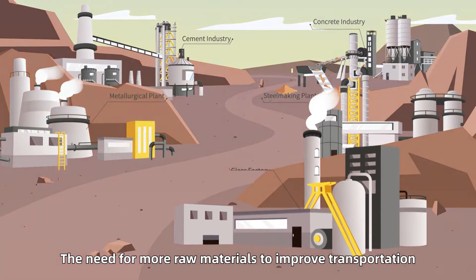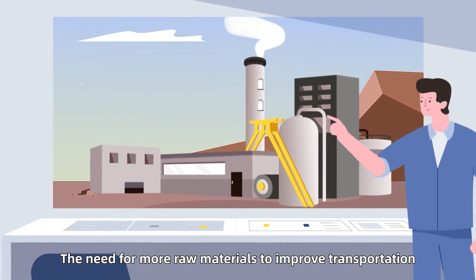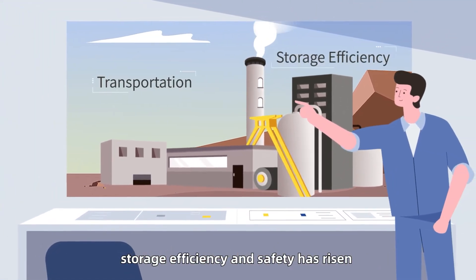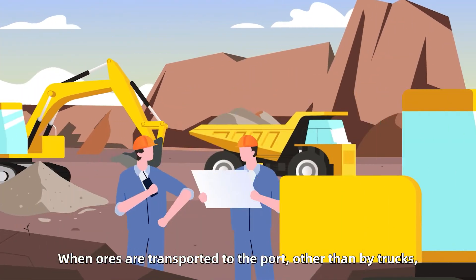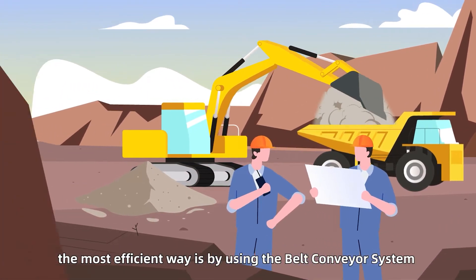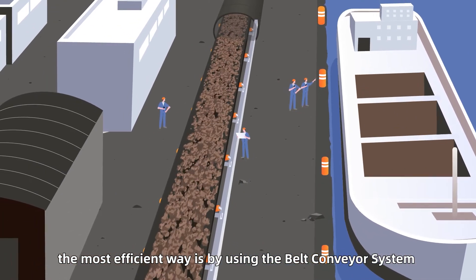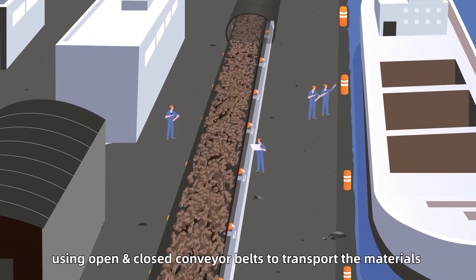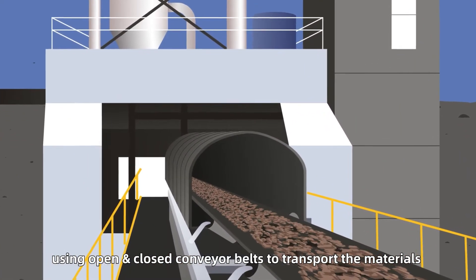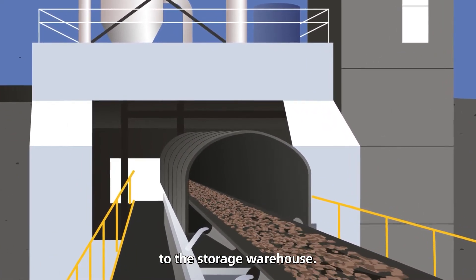The need for more raw materials to improve transportation, storage efficiency and safety has risen and become increasingly important. When ores are transported to the port other than by trucks, the most efficient way is by using the belt conveyor system, which establishes a continuous transportation path using open and closed conveyor belts to transport the materials to the storage warehouse.